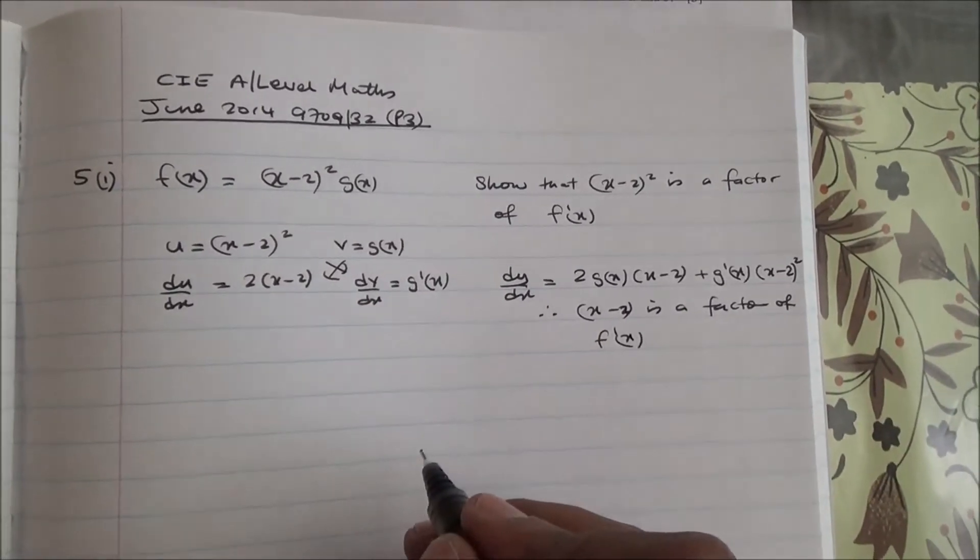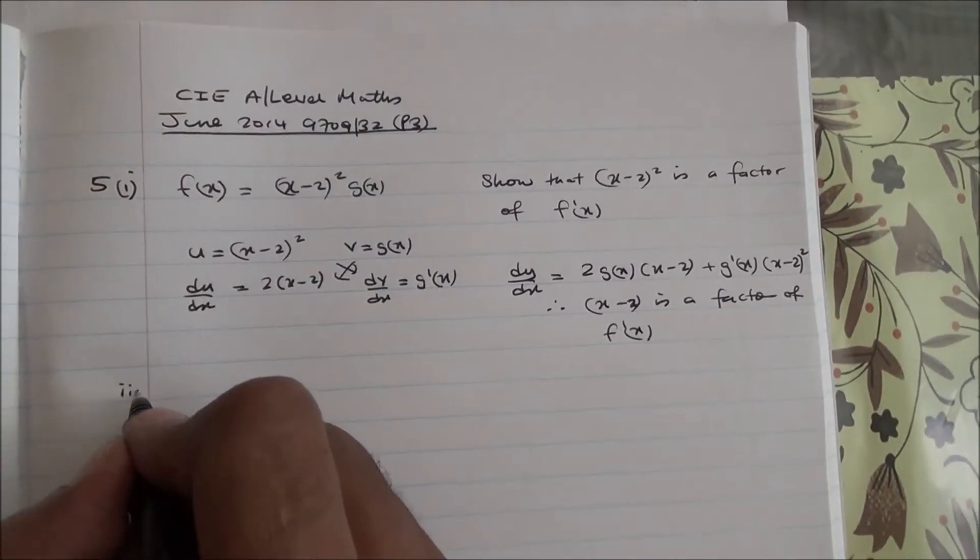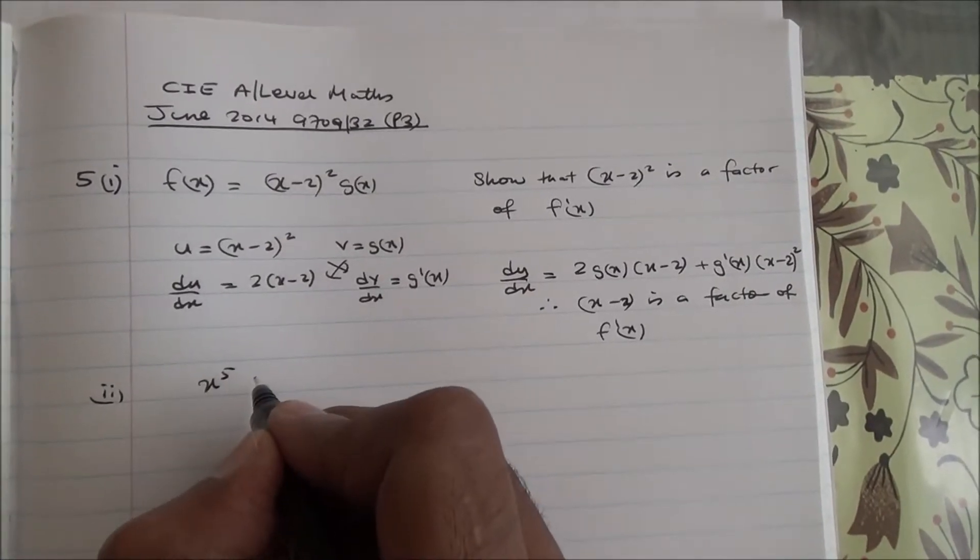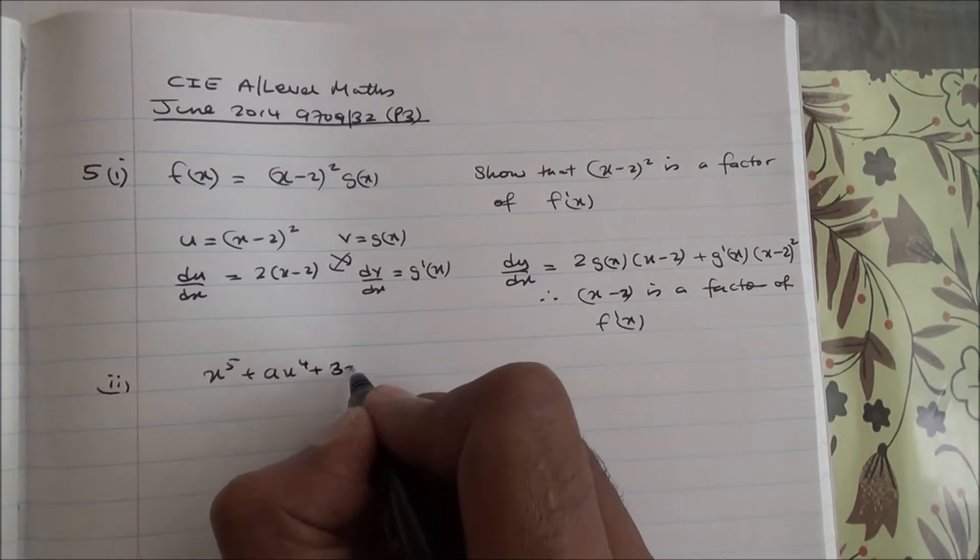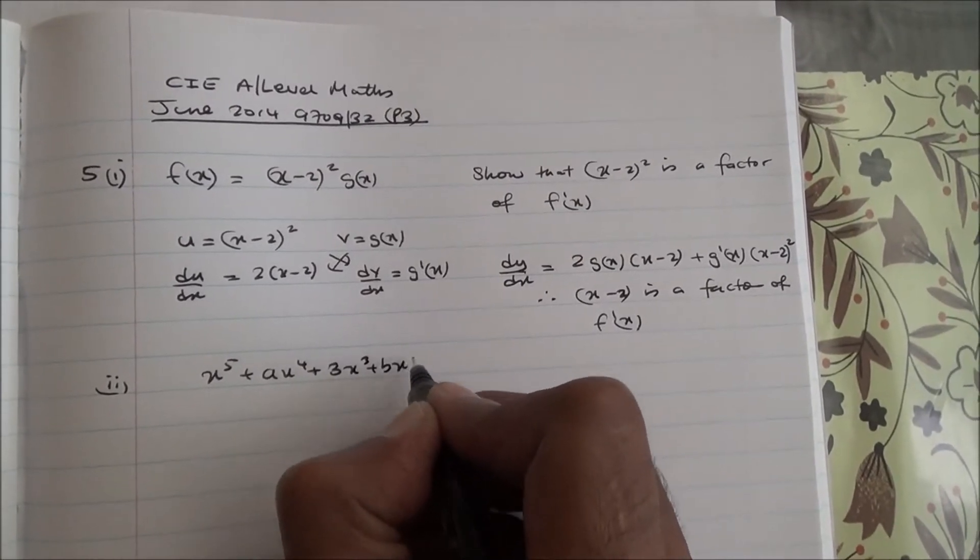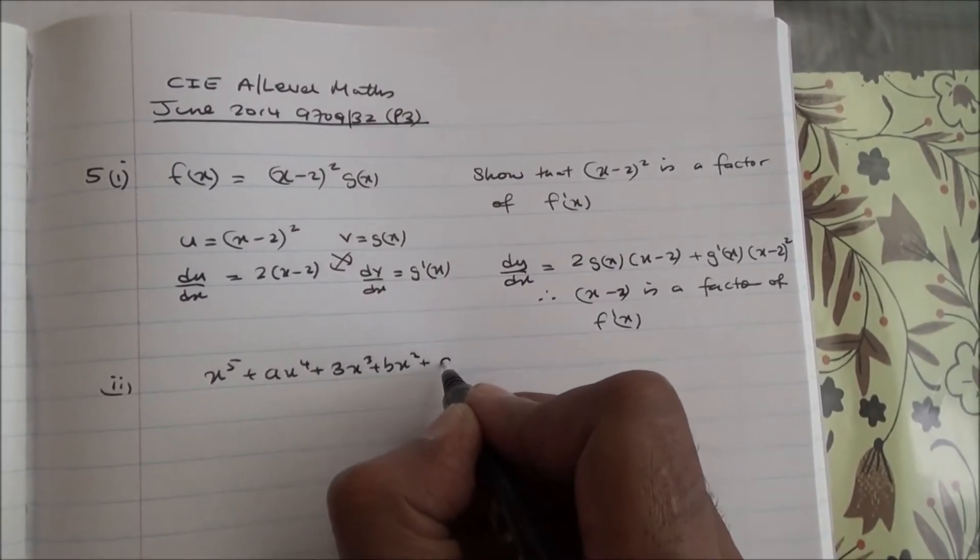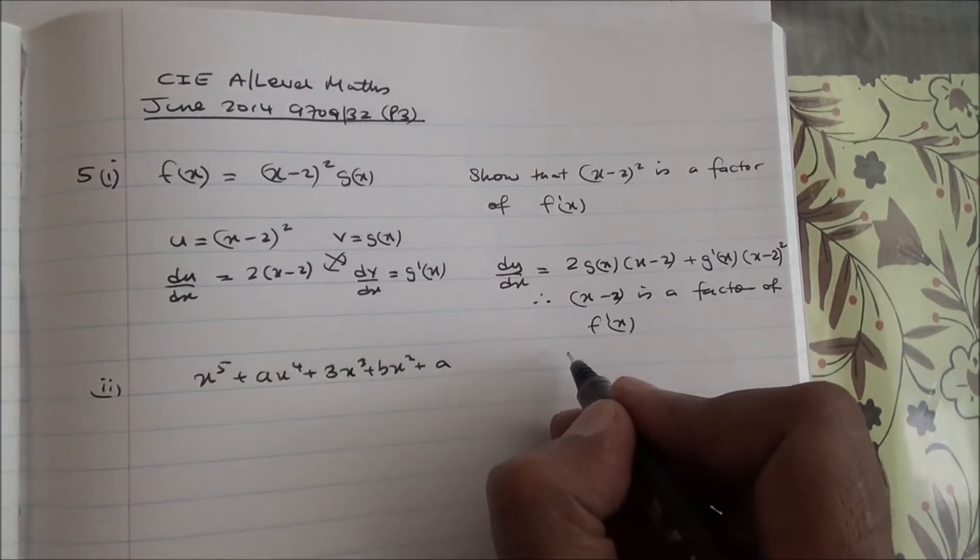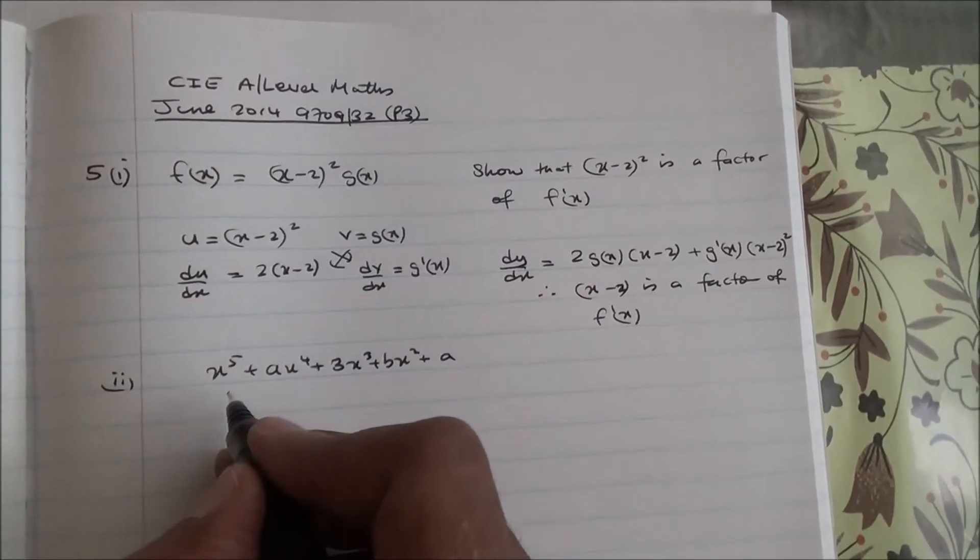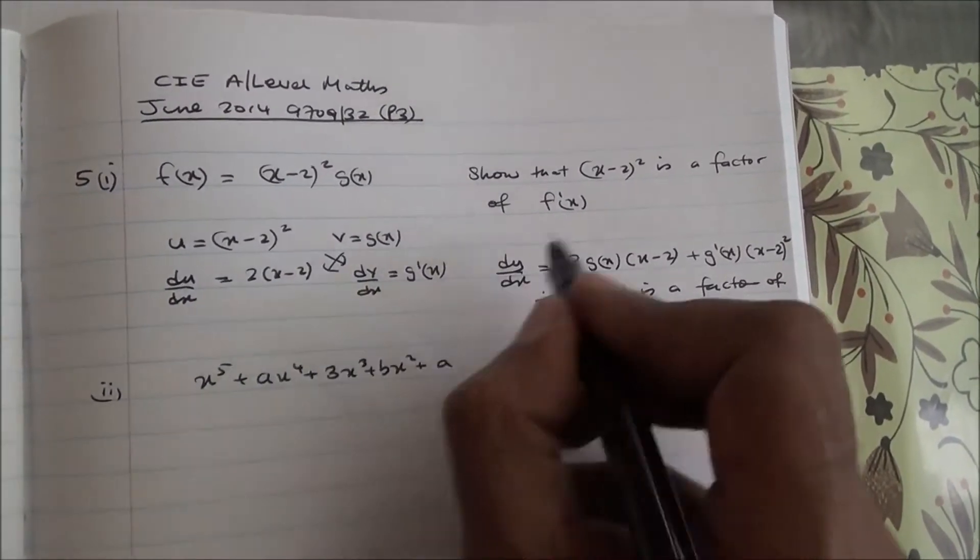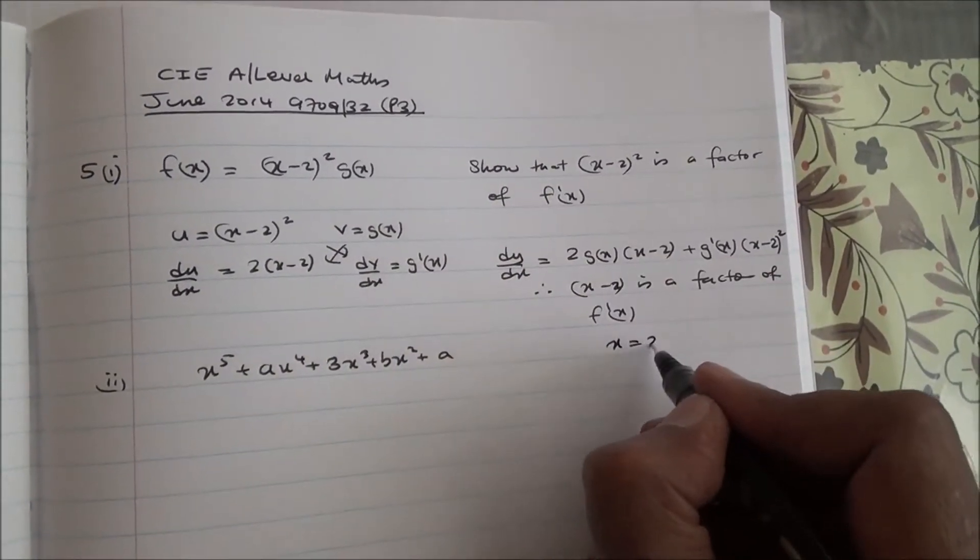For the second part, we are given the polynomial x⁵ + ax⁴ + 3x³ + bx² + a. Now, to show that we need to find the values of a and b, if that is a factor of this, if it's a factor, then x = 2.